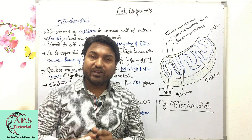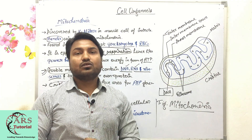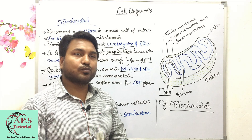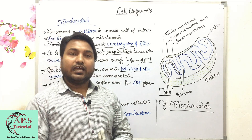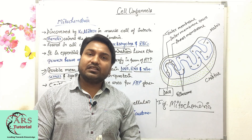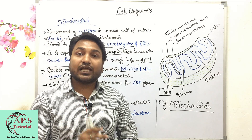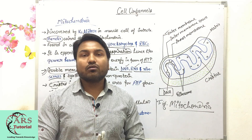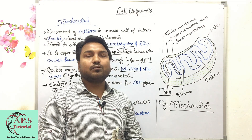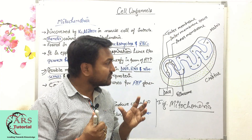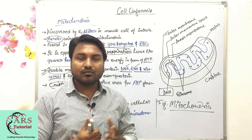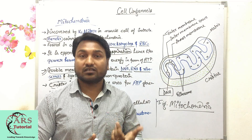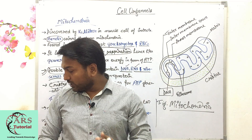The main point to remember: mitochondria is known as the powerhouse of the cell because it produces energy in the form of ATP. That is also why mitochondria is known as the energy currency of the cell. Now let's look briefly at how mitochondria produces energy.